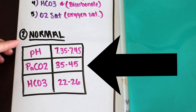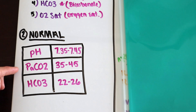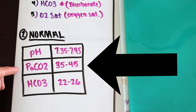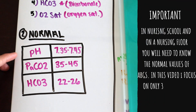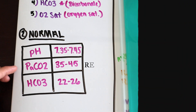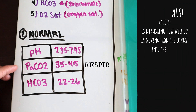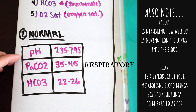Let's focus on our normal values — we'll keep three of the five components particularly in mind: the pH, the PaCO2 which is your carbon dioxide, and your HCO3 which is your bicarb. A pH of 7.35 to 7.45 is normal. Your PaCO2 is easy to remember because it's also between 35 and 45, similarly to the pH range.